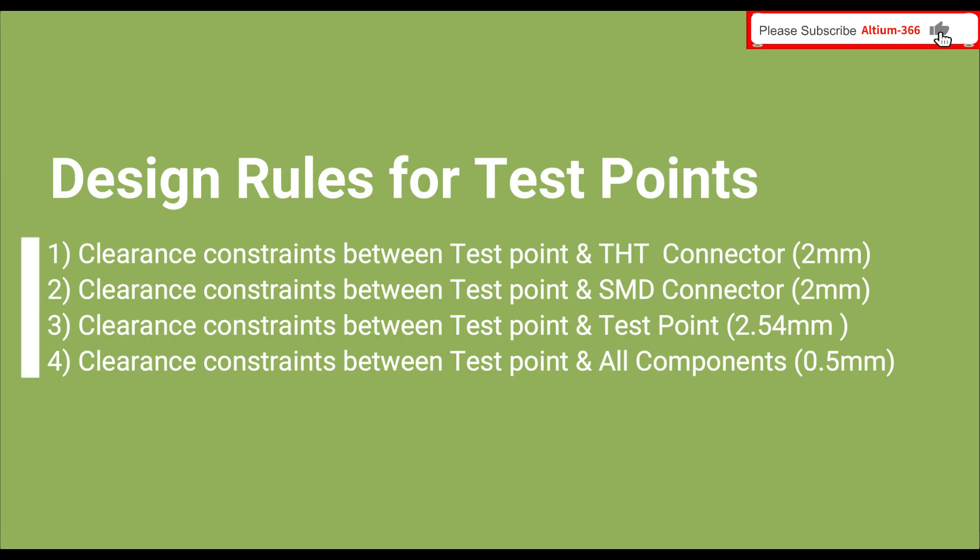The third design rule is between the two test points — there should be at least 2.54 millimeter distance between them so that your PCB manufacturer can perform the ICT test. The fourth is the clearance constraint between the test point and the rest of the components on your PCB.